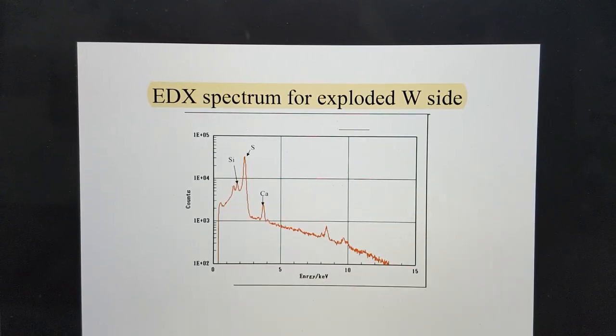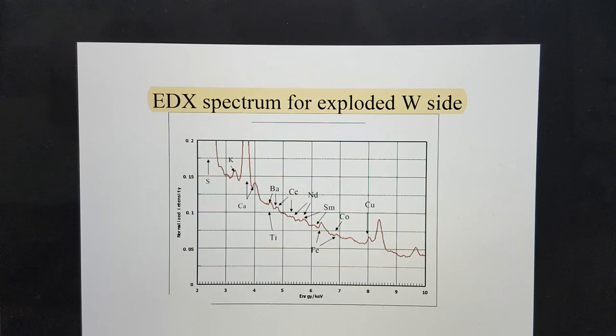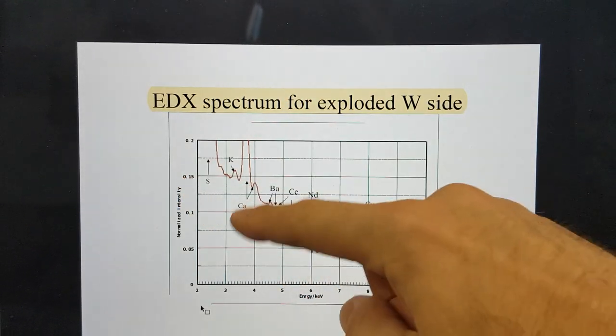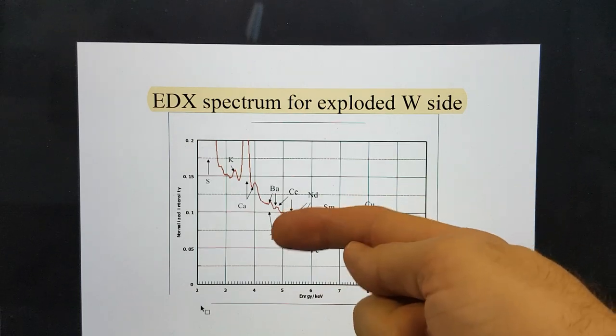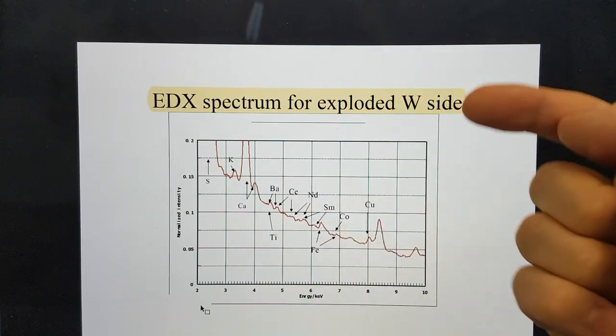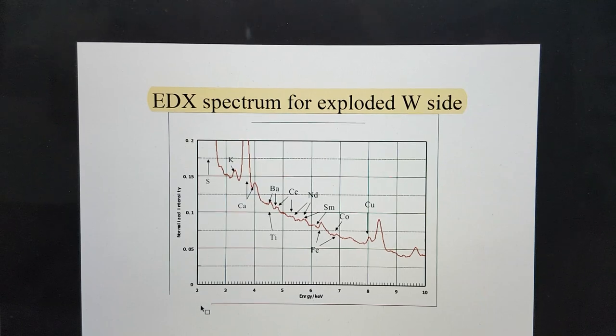They go in to look at this in extra detail because the minor synthesized elements are in here. What they observed was sulfur, the potassium's there before, calcium is there. But they got titanium, barium, cerium, neodymium, samarium, iron, cobalt, and copper. That's quite a broad spread.